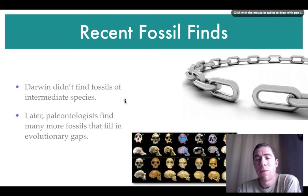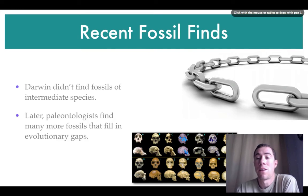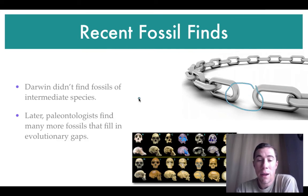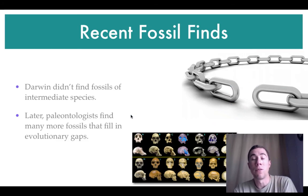When Darwin was developing the theory of evolution, he found quite a few fossils, but he didn't find every single one — particularly what are now known as intermediate fossils, or the fossils considered the 'missing link.' However, later paleontologists have found fossils that fill in those evolutionary gaps, and these recent fossil finds support Darwin's theory of evolution.